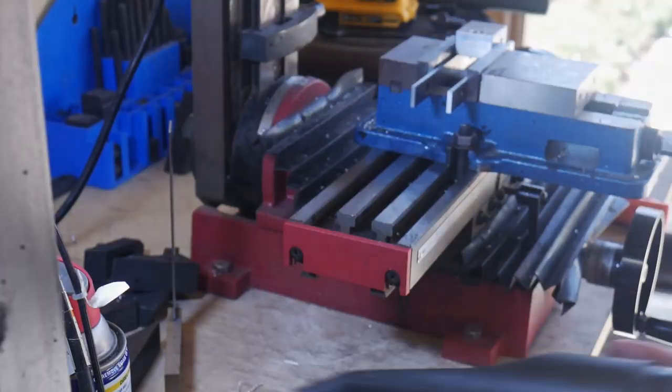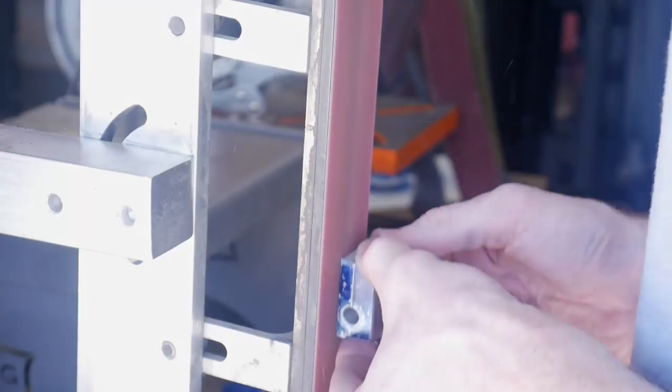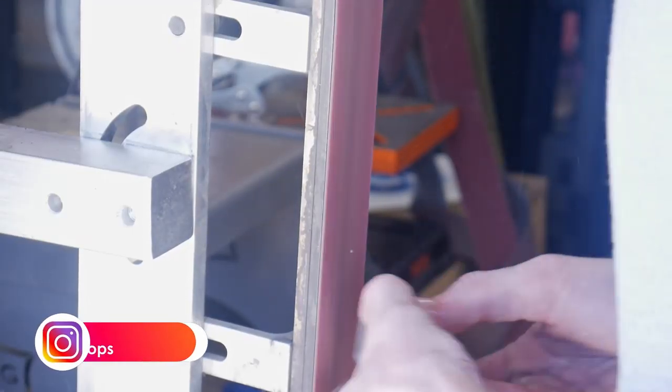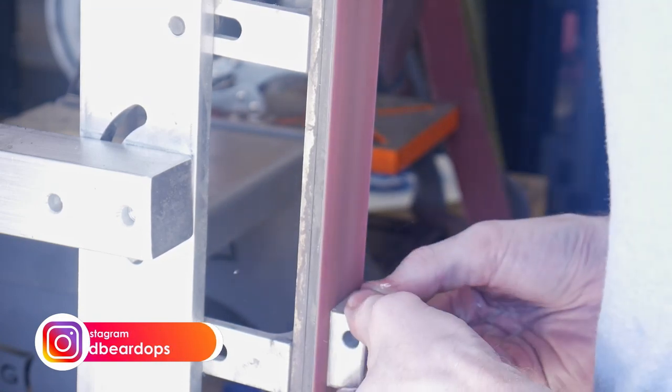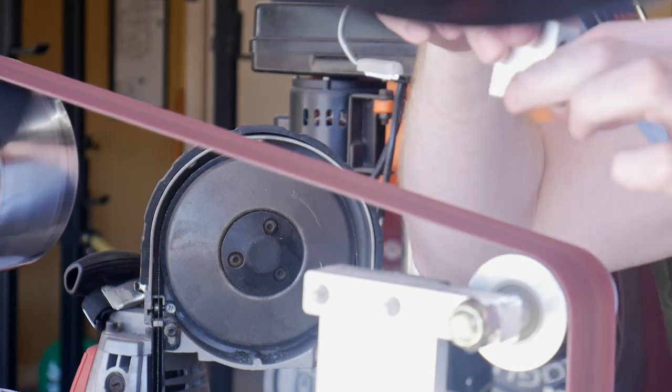I then clean up the work area and then clean up the piece so that there are no aggressive burrs on our little piece here. I use the slack belt portion of my 2x72 to round over all the corners so I have a nice smooth piece.